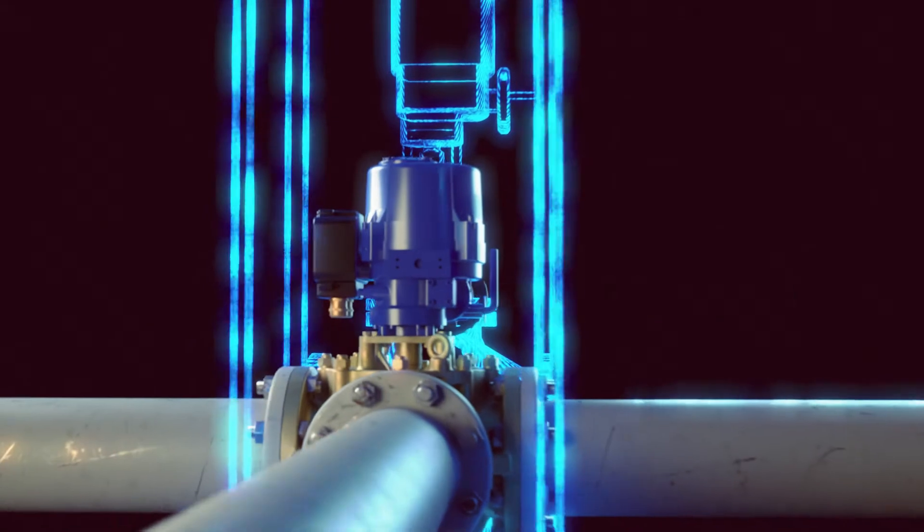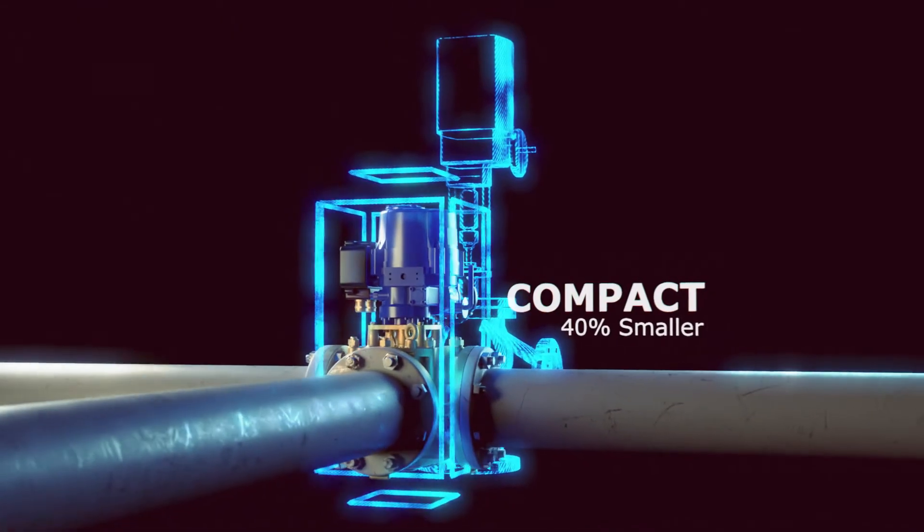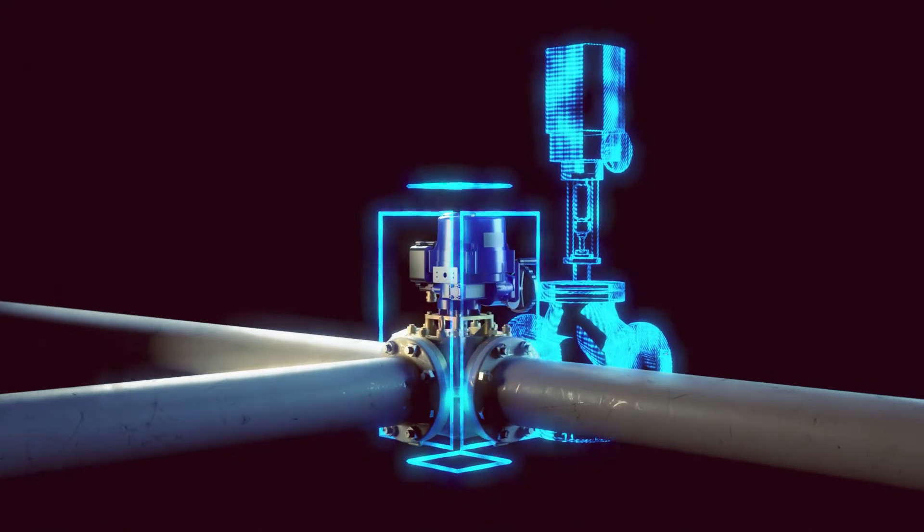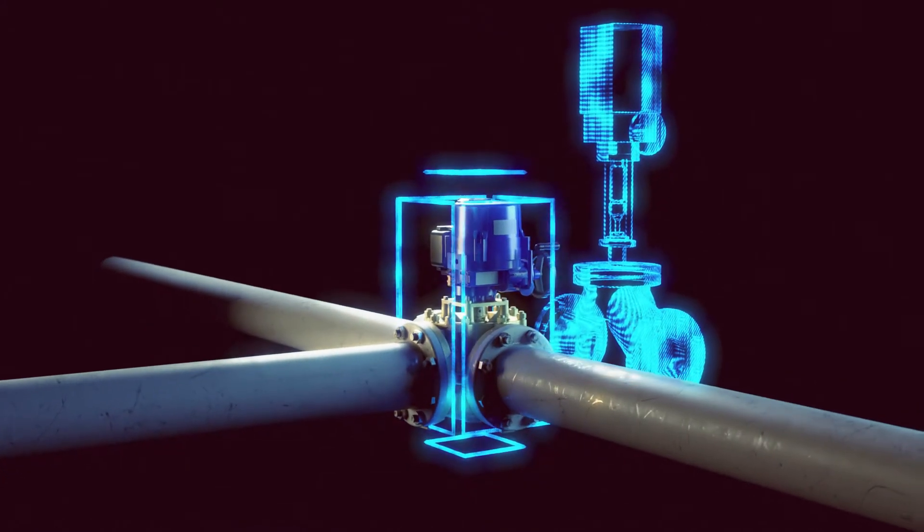The G-Valve's rotary design reduces its footprint by 40% compared to a globe valve. This compact arrangement easily fits in tight spaces to reduce installation time and overall package size.